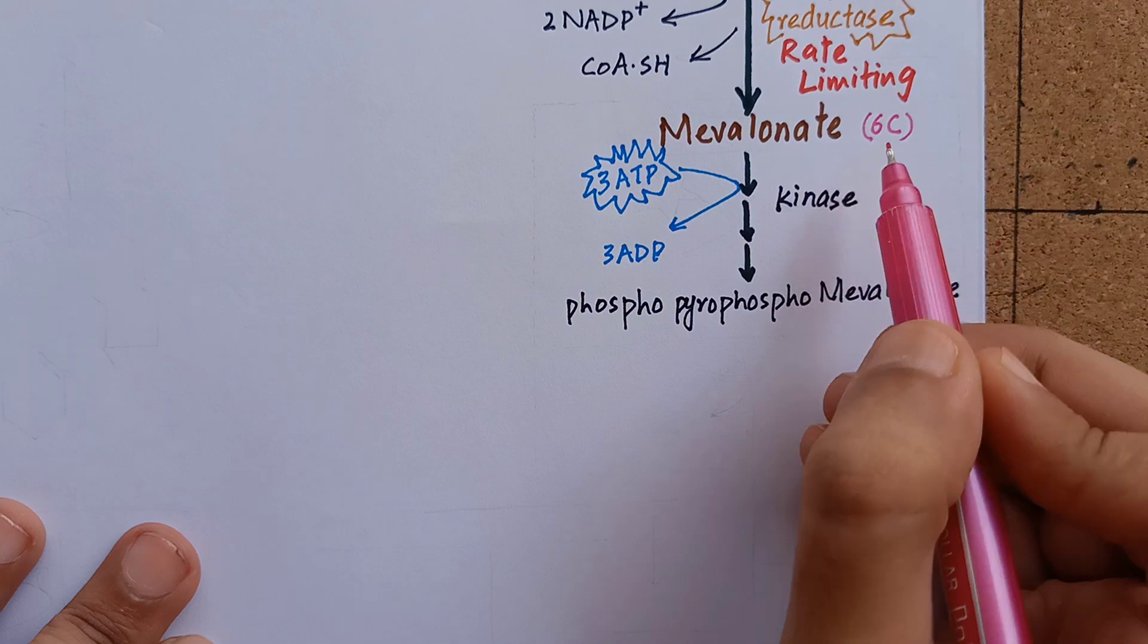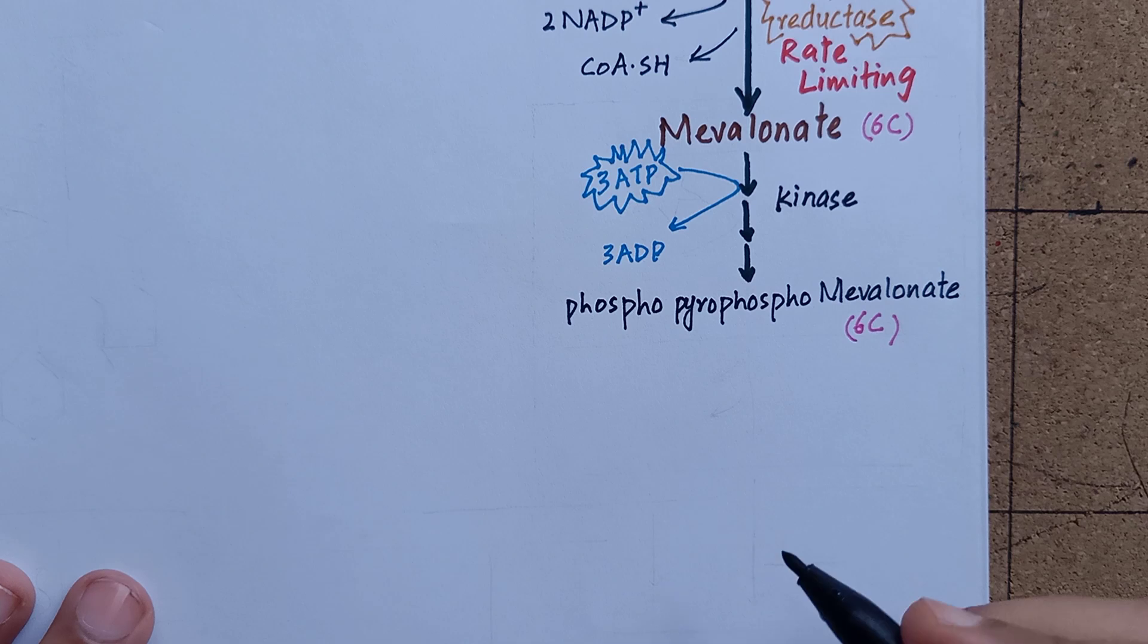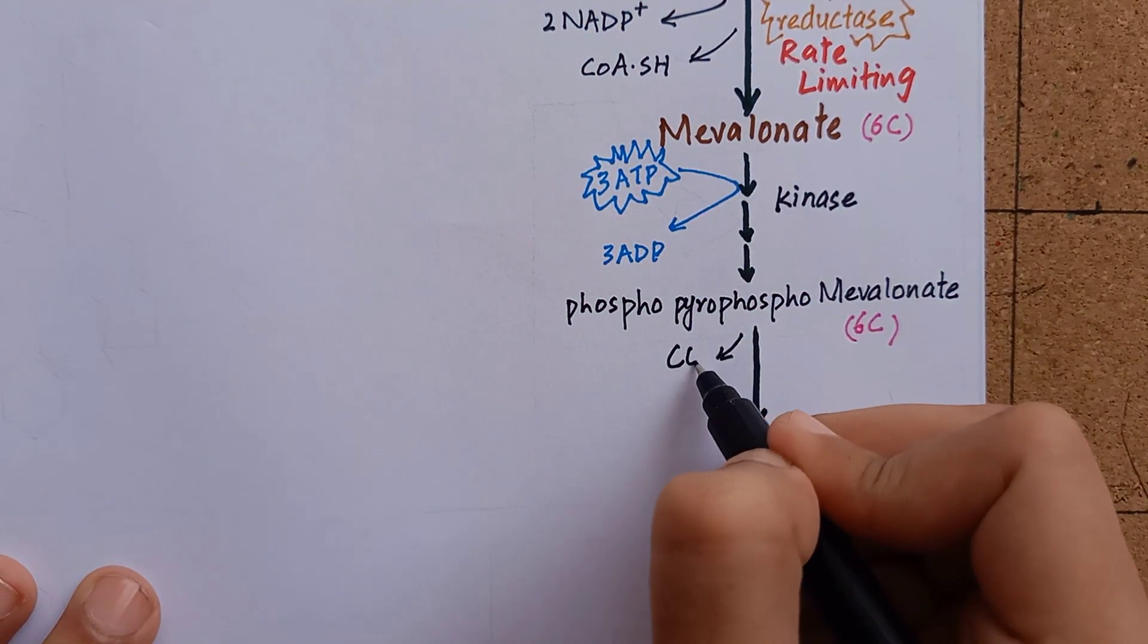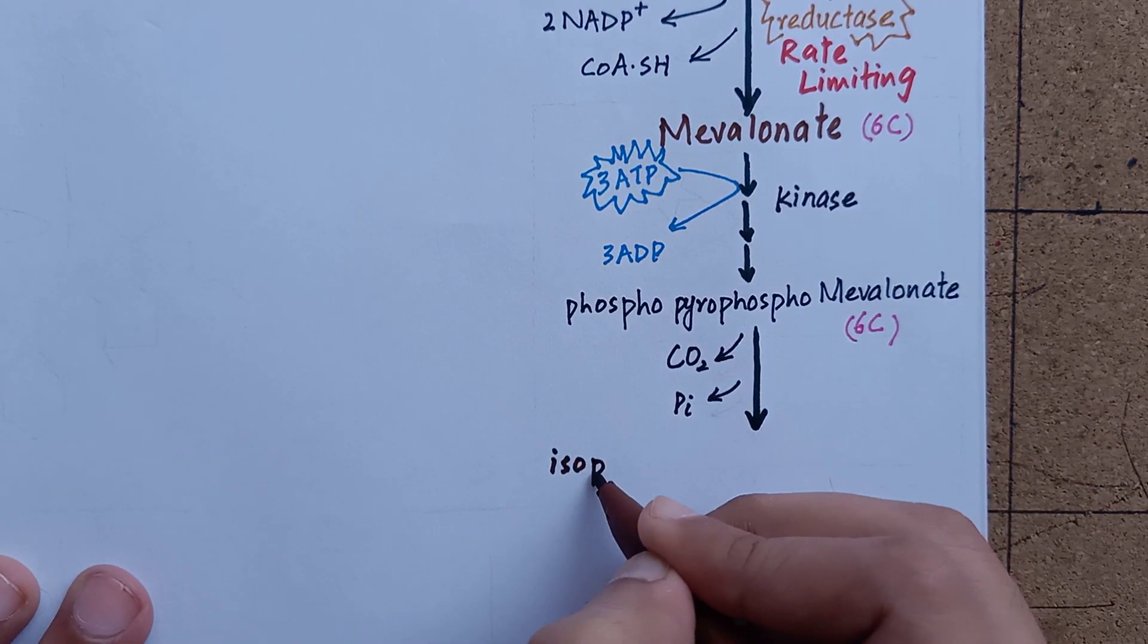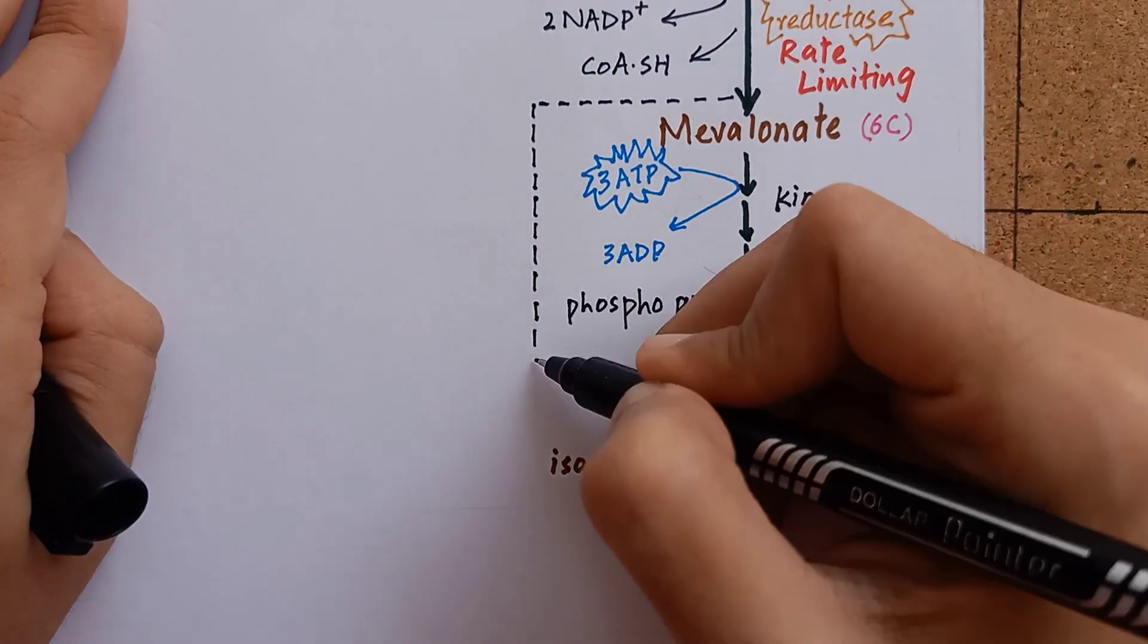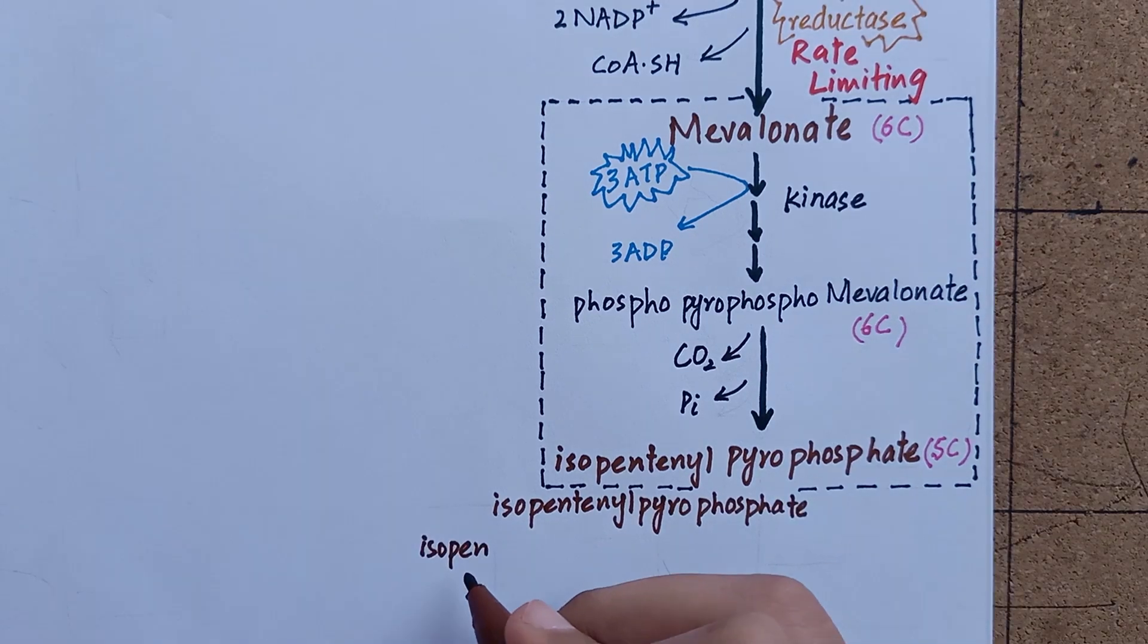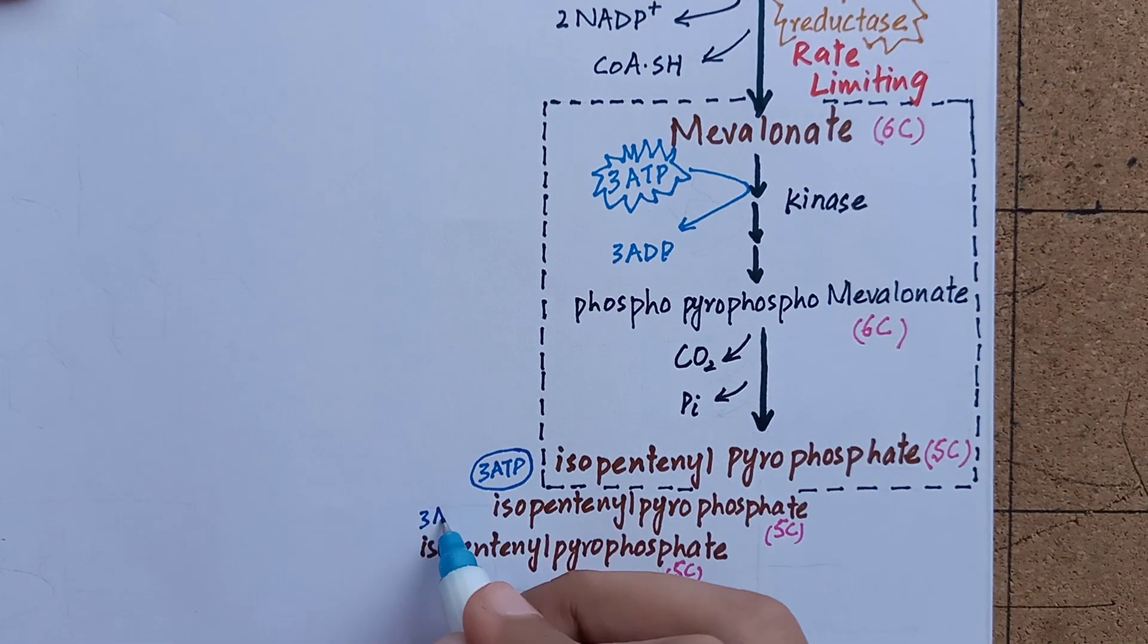Mevalonate was a 6-carbon compound. Phosphopyrophosphomevalonate is also a 6-carbon compound. One of the carbon atoms will leave this phosphopyrophosphomevalonate in the form of carbon dioxide along with a phosphate group. This decarboxylation will produce a 5-carbon compound known as isopentenyl pyrophosphate. This portion of steps is important because more and more molecules of isopentenyl pyrophosphate will join together to form one molecule of cholesterol.